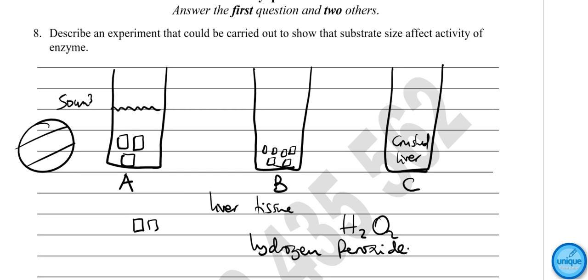The moment we place the liver tissue into the test tubes containing hydrogen peroxide, we start the stopwatch to record the time taken for foam to rise to the top of the test tube.